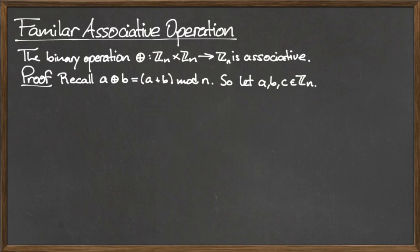To prove that o plus is associative, let n be a natural number and let a, b, and c be arbitrary elements in Z mod n.